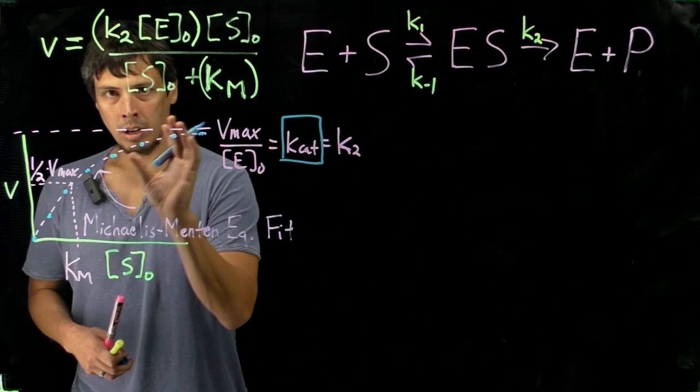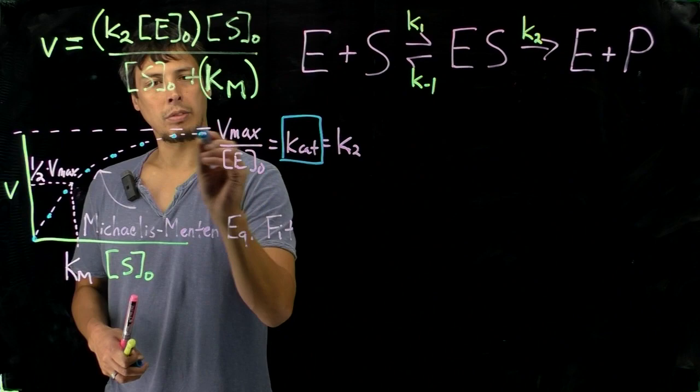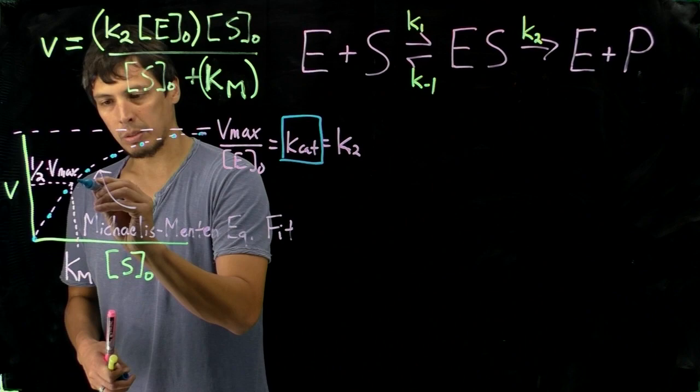And so we can also visually inspect the curve for Km, because when we do this fit, what we can do is find out what Vmax is, look for one-half Vmax, project the line to our Michaelis-Menten plot...